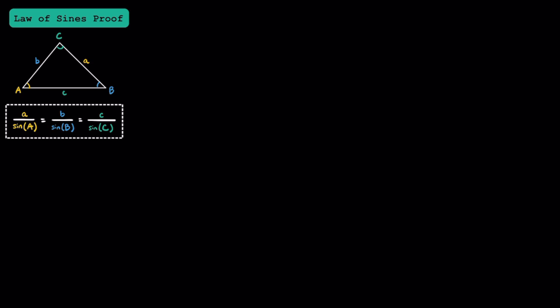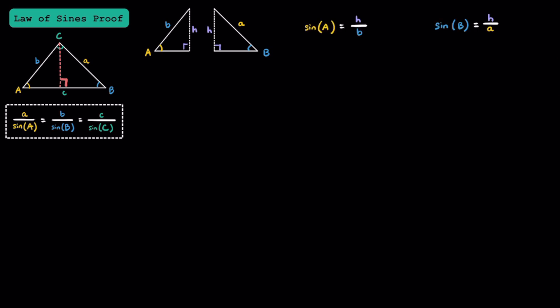Just in case you're interested, I'm going to show you where the law of sines actually comes from. I'm going to start by drawing an altitude — a line that represents the height of this triangle — so we can divide this into two right triangles. Here are our two new triangles, and I'm going to label the height h. Now that we have two right triangles, we can use SOHCAHTOA, or our trig functions, to write some equations. For the triangle on the left, since sine of an angle is equal to opposite over hypotenuse, we can write sine of angle A is equal to h over b.